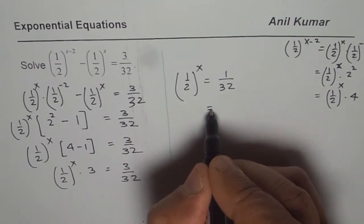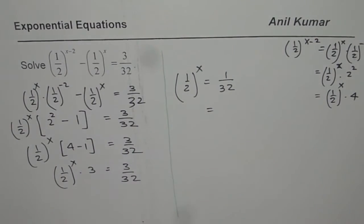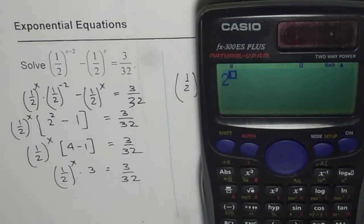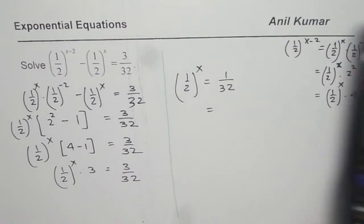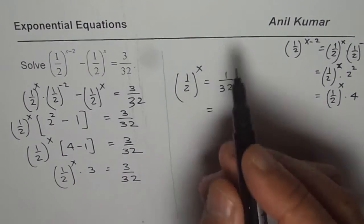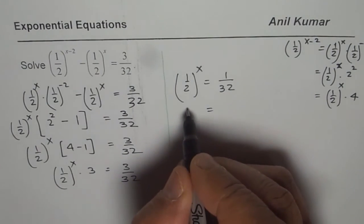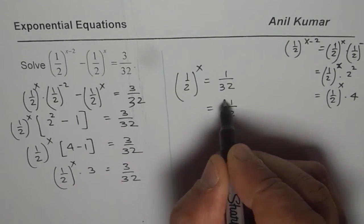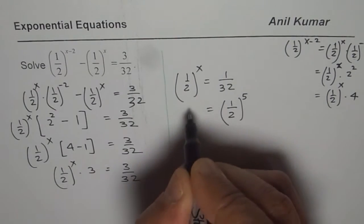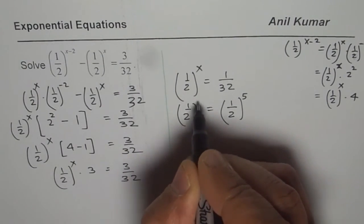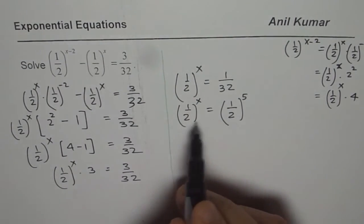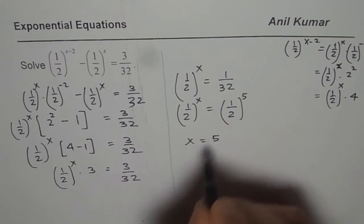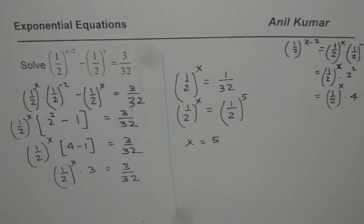Now 32 can be written as 2 to the power of 5. So we have 1 over 2 to the power of 5 equals half to the power of x. Since the bases are the same, we can say x equals 5. So that becomes our answer.